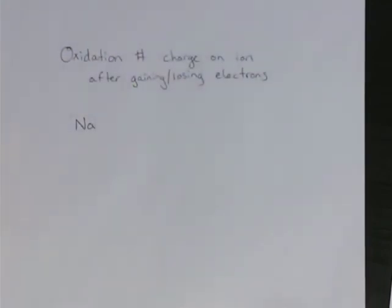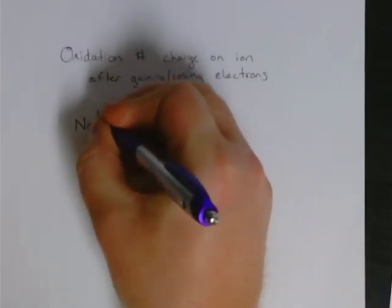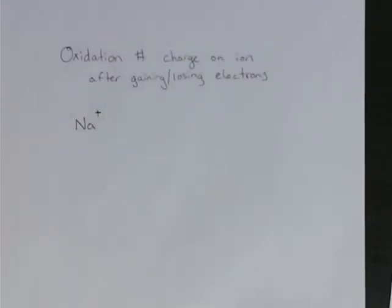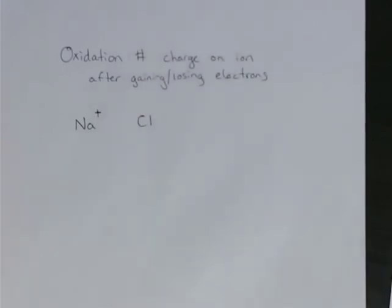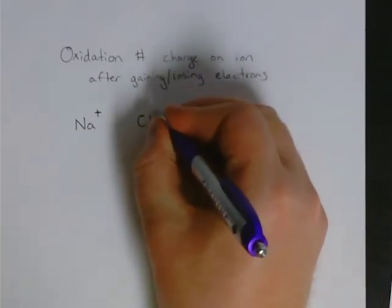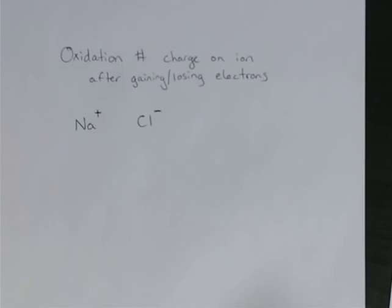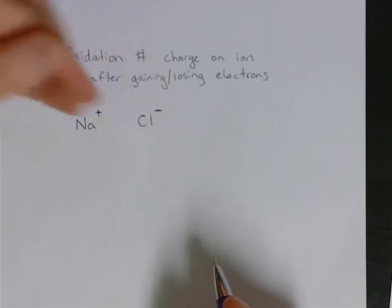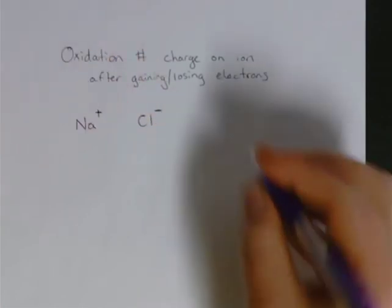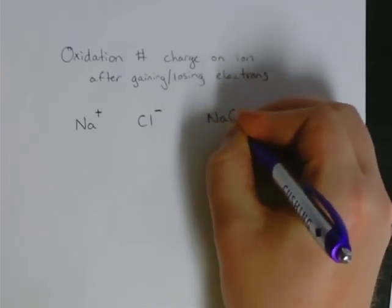Let's work through the same examples using oxidation numbers instead of drawing the electrons. Sodium has one valence electron and it's a metal, which means it loses an electron and becomes a 1+ ion — we represent that with a plus sign as an exponent next to sodium. Chlorine has seven valence electrons and it's a non-metal — following the octet rule, chlorine needs to gain one electron, so it becomes a 1− ion. The total charge on the compound needs to equal zero. Sodium's 1+ and chlorine's 1− total zero on their own, so it's a one-to-one ratio: NaCl.